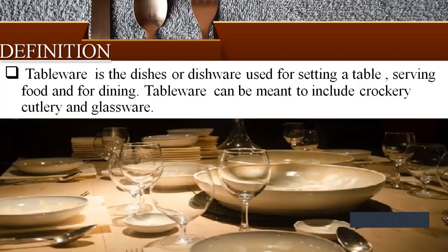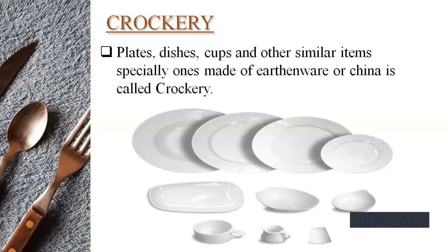Now, first we will understand what is crockery. What do we mean by crockery? Crockery is the plates, dishes, cups, and other similar items, specially ones made of earthenware or china. Here in this picture, you can see a full plate, half plate, and quarter plate. You can see the picture of cups, saucer, and bowl.